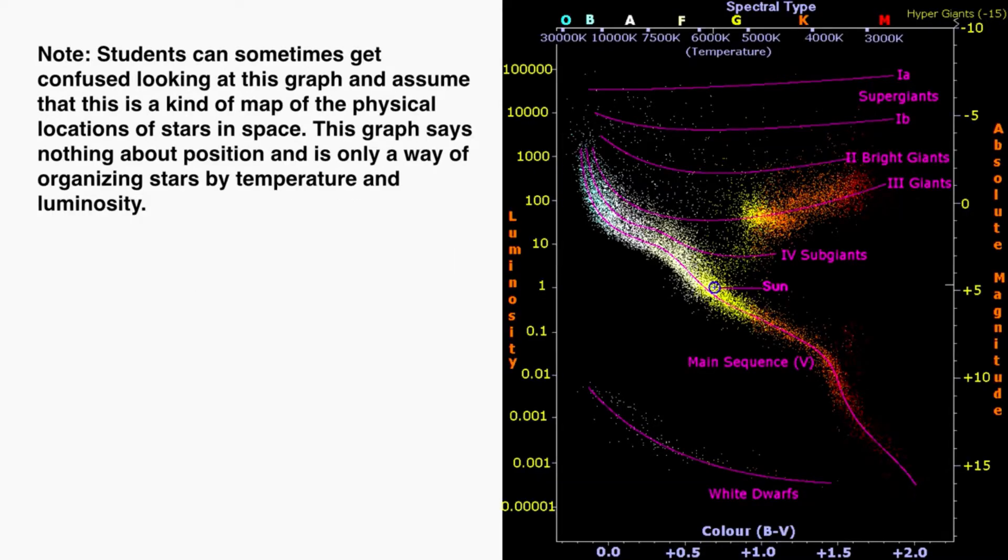Just as a note, students can sometimes get confused looking at this graph and assume that this is a kind of map of the physical location of stars in space. It looks like it could be maybe a strangely shaped cloud of stars, but this graph says nothing about the position of stars and is only a way of organizing them by temperature and luminosity. This says nothing about where stars physically are in space.